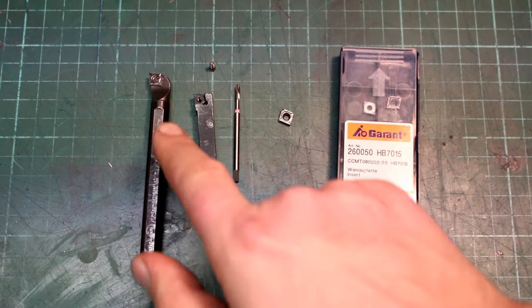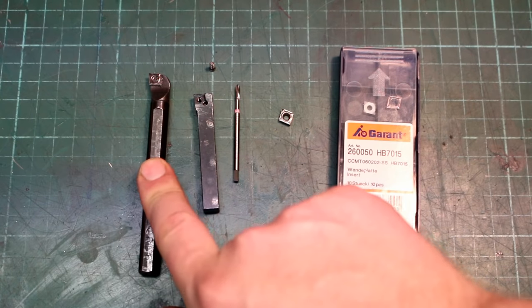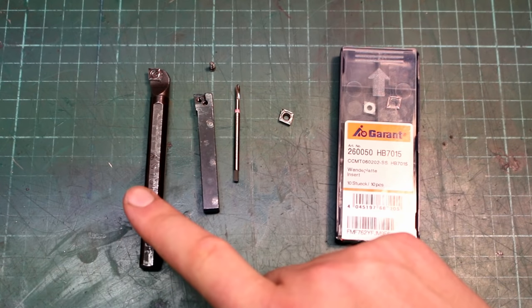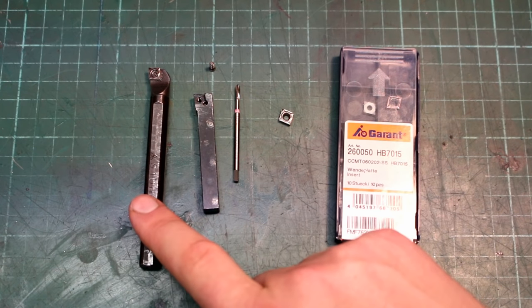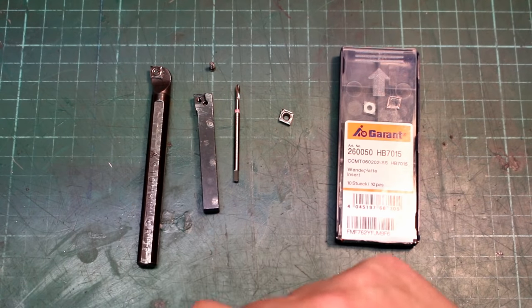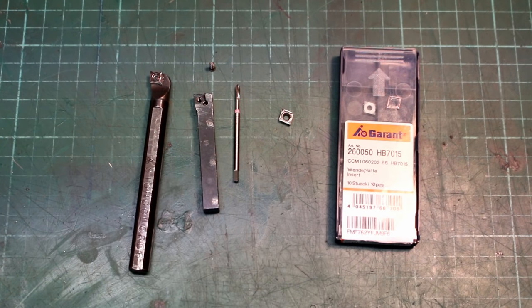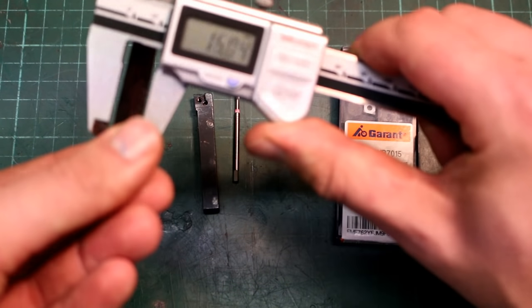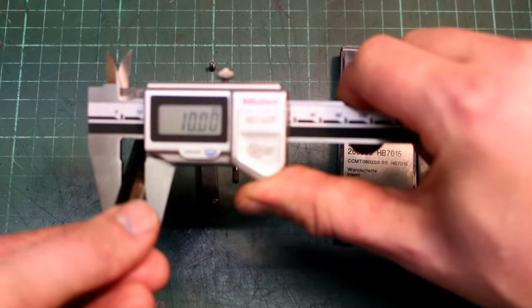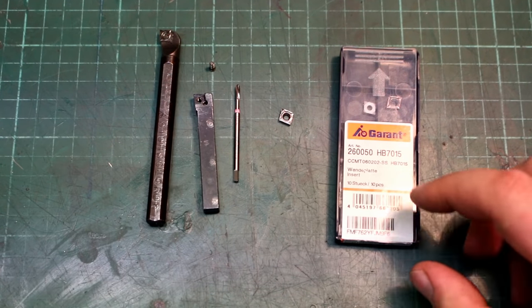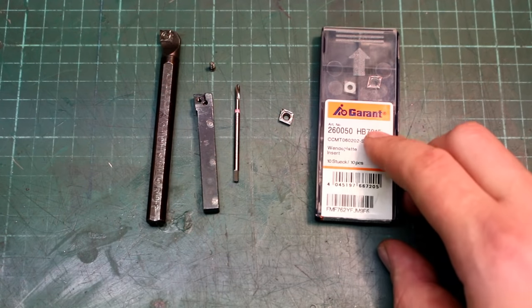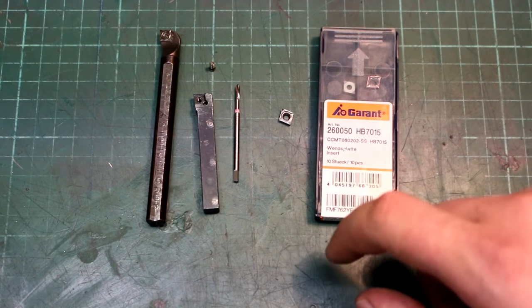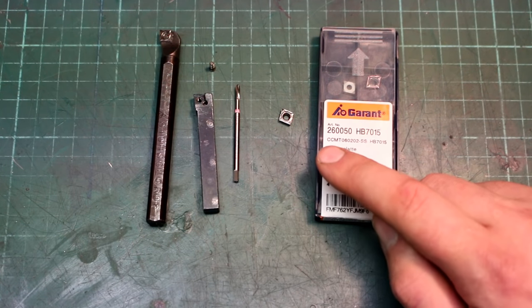Here I have one of my boring bars also for the CCMT-0602 inserts. This is a Mitsubishi carbide boring bar. It's a steel boring bar but it's fine. It has a 10mm shank. And here are again the inserts. Garand is the house brand of my tool supplier. Pretty decent quality.